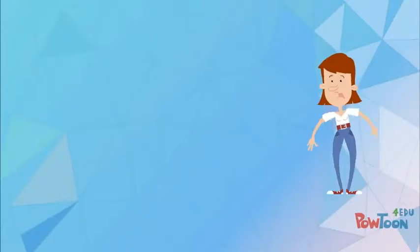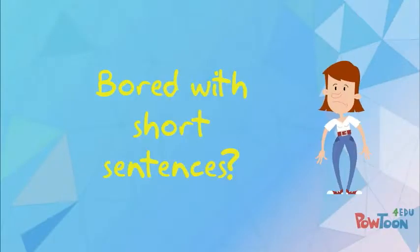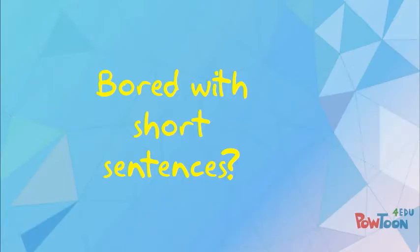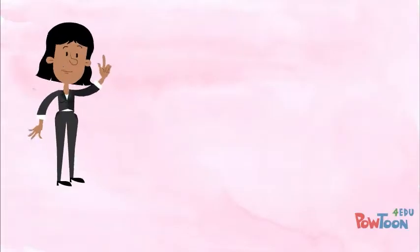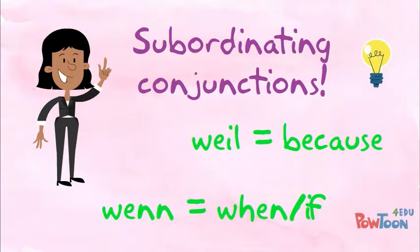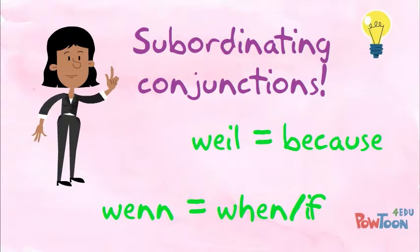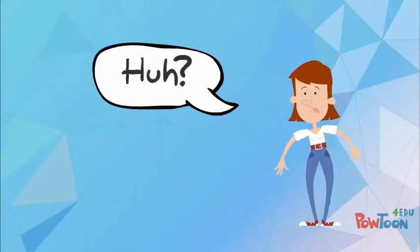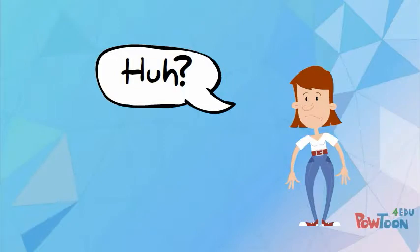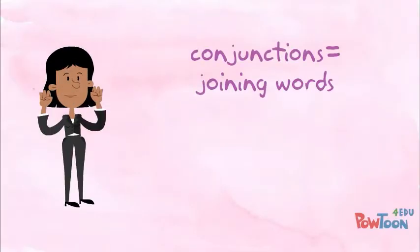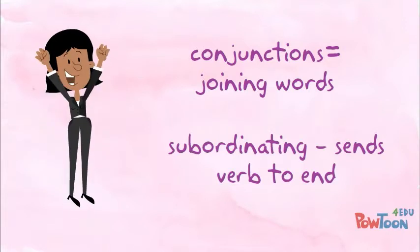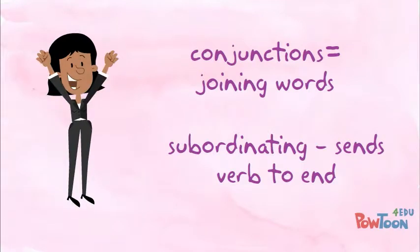Hi there. Are you getting bored with short sentences in German? Well, have I got a solution for you — use subordinating conjunctions. For example, weil and wenn. Don't know what subordinating conjunctions are? Well, a conjunction is a joining word, and when it's subordinating, that just means it sends the verb to the end.